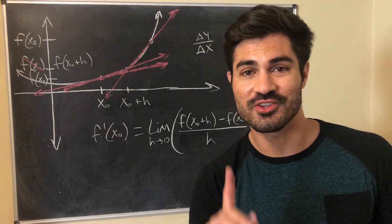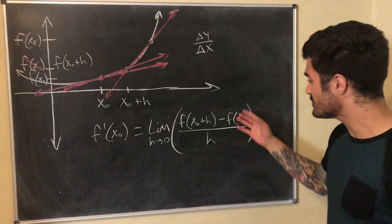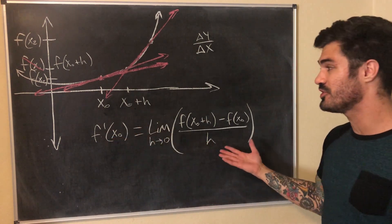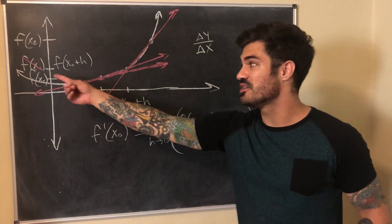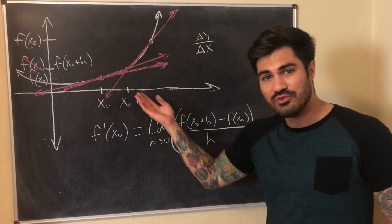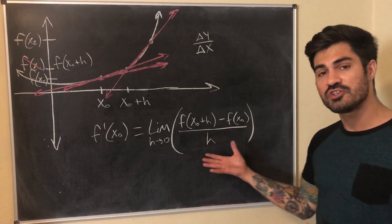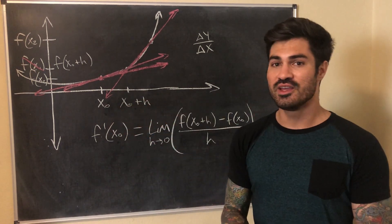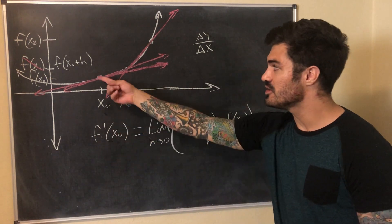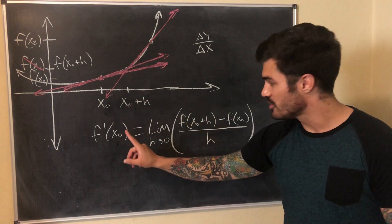One more thing: this is the instantaneous rate of change or derivative at a specific point x0, so we get a real number — the slope of a tangent line is always a real number. But we can also express the instantaneous rate of change as a function. Instead of plugging in a specific x0, we leave it as an arbitrary x, and then instead of a real number we get a function. We can use that function to plug in x values and get the slope of the tangent line at any given point along the curve.